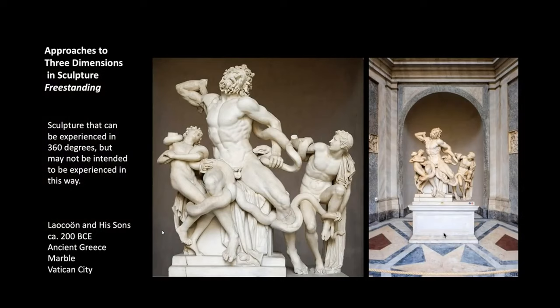Then we have freestanding sculpture — the opposite of relief — which means you can walk around it. A great example is the Laocoön and His Sons from 200 BCE, from the Hellenistic period of ancient Greece, a period that occurred after the death of Alexander the Great. Freestanding means sculpture that can be experienced in 360 degrees, but it may not be intended to be experienced this way — some artists don't require all angles for what the narrative is trying to do.